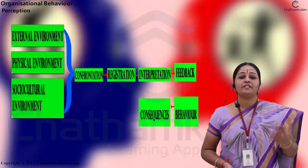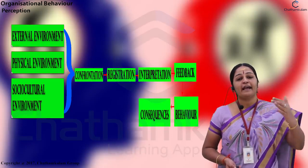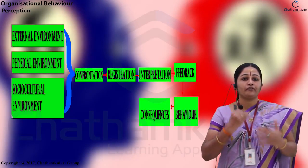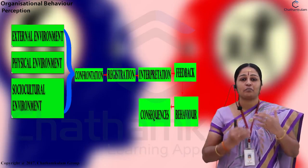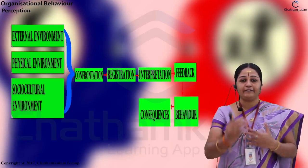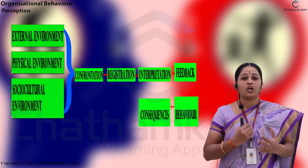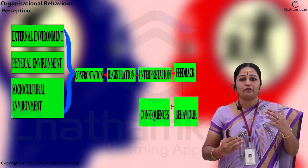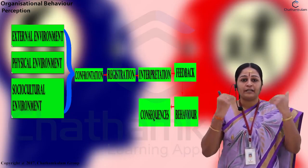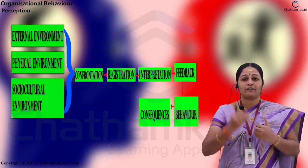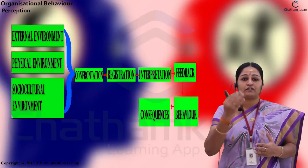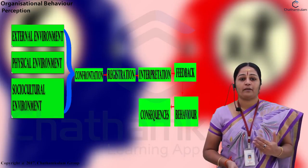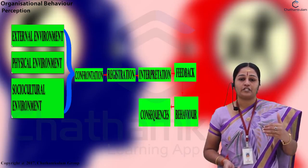The perception process begins with the external environment — physical and socio-cultural. From this environment, we encounter stimuli on a continuous basis. When we interact with the environment, these stimuli get registered in our brain. After that, we interpret the various information we received, and this interpretation is given as feedback. Based on this feedback, we behave in a particular manner, which then produces certain consequences or responses from the external environment. This is the process of the concept called perception.